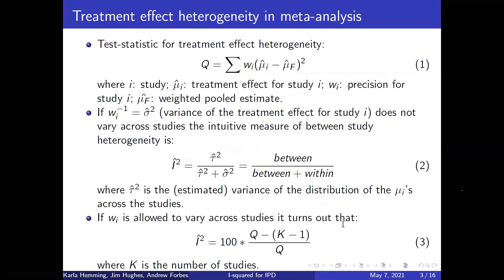I'm going to focus on the random effects case. When we want to test for treatment effect heterogeneity, as Julian mentioned, we can use the Q statistic. Essentially, that's the sum of the squared differences between the study-specific estimates and the pooled estimate, weighting to allow for the fact that some studies are bigger and lend more information. When studies are all of a similar size, we can describe treatment effect heterogeneity using the I-squared statistic, which is very roughly equal to the between-study heterogeneity divided by the sum of the between plus within-study heterogeneity.